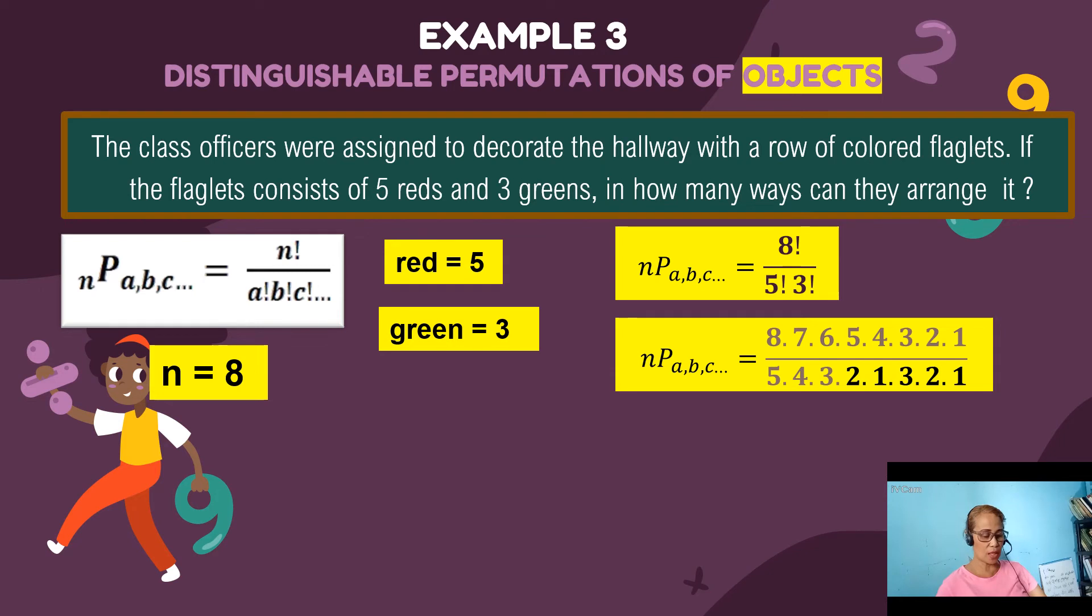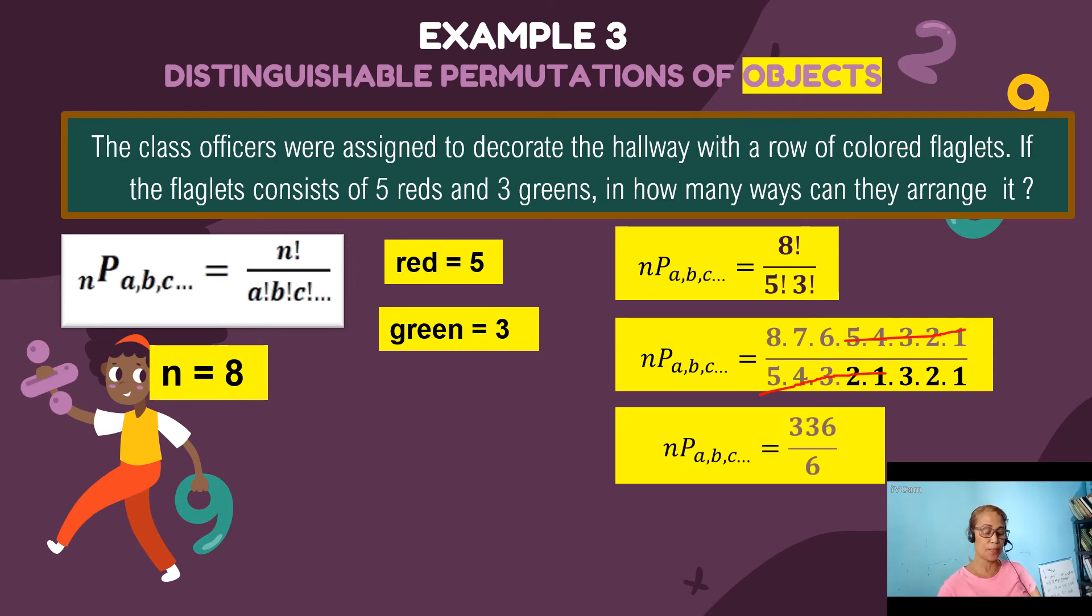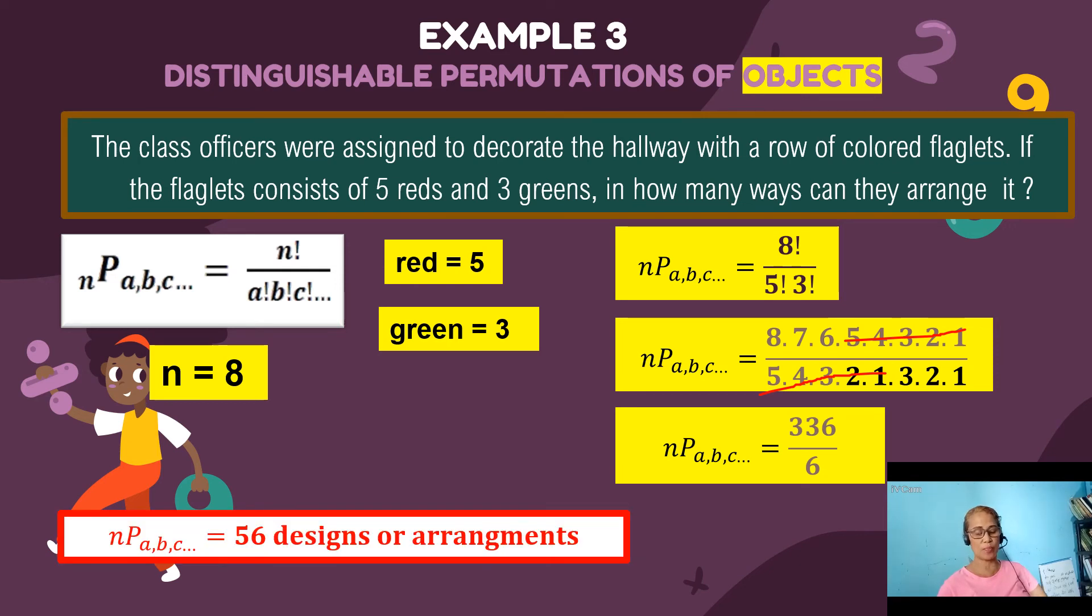And obviously, we can cancel the common factors 5, 4, 3, 2, 1 on the top and the bottom part, which leaves us with 8 times 7 times 6 on the top part. And on the lower part, we are left with 3 times 2 times 1. Now multiplying all together, we get 336 divided by 6, which is equal to 56.